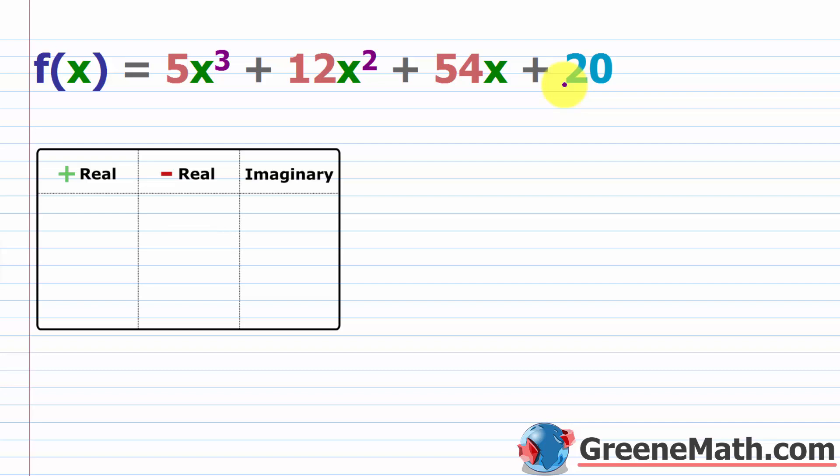There are a lot of different strategies you can employ here. But the first thing I would do is look at the degree of the polynomial — we see that it's three. So immediately I know that there are three solutions. There could be repeated solutions, but I know there are three. Because the imaginary solutions, or the non-real complex solutions, come in conjugate pairs — meaning there could be zero, two, four, and so on — that tells me there's either one real solution and two imaginary solutions, or there are going to be three real solutions.